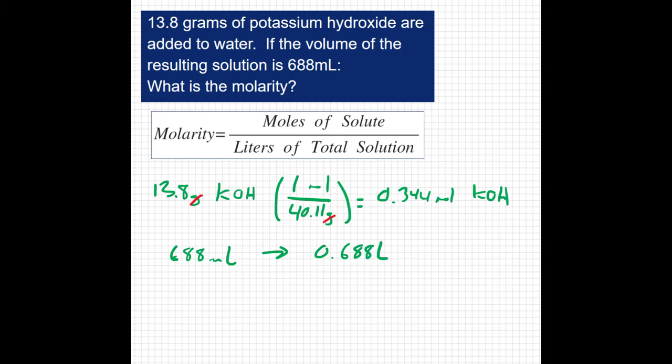Remember, 1,000 milliliters in a liter. So now I can find my molarity by saying my moles of solute, 0.344 moles of KOH, all over 0.688 liters of solution, and that gives me 0.5 as an answer.